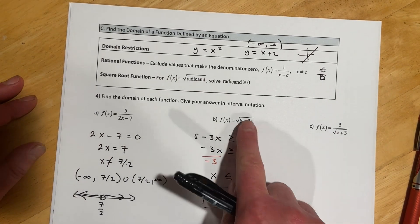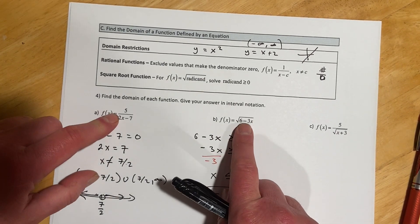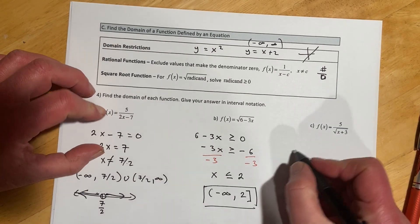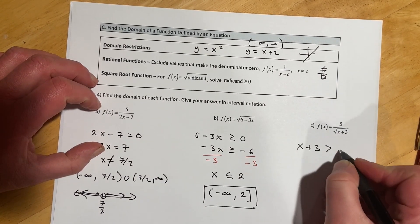And in that one, same idea, it's actually that these two combined. So we have a radical, so that means this stuff has to be greater than or equal to 0,